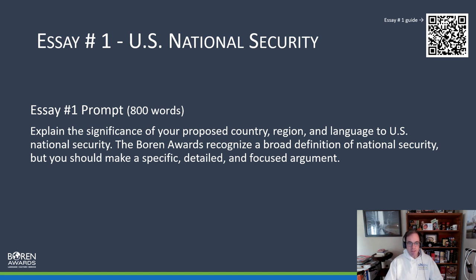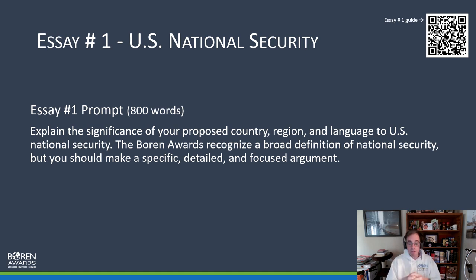Essay number one: U.S. national security. We're giving you 800 words to explain the significance of your proposed country, region, and language to U.S. national security. I always emphasize U.S. — don't forget that we're talking about U.S. national security. So if you're applying for Japan and you make a great argument about why Japan is important but you forget to mention the U.S., that could get you in trouble. You need to make sure you're specific about why U.S. national security is part of your argument. We recognize a very broad definition of national security, but you need to make a specific, detailed, and focused argument.